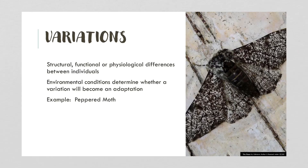A variation is a structural, functional, or physiological difference between individuals. As you know, in our class and amongst the human population, there are all kinds of variations. Some people are tall, some people are short, some people have curly hair, and so on.